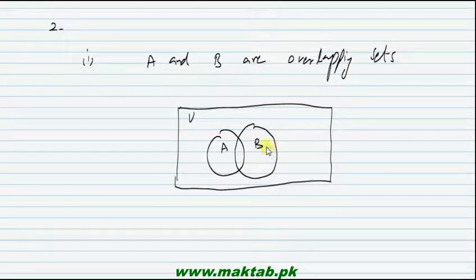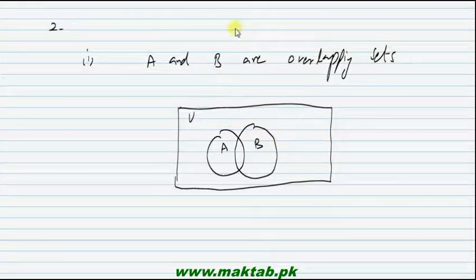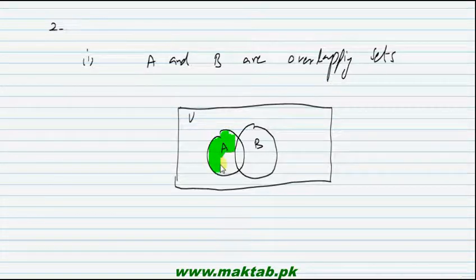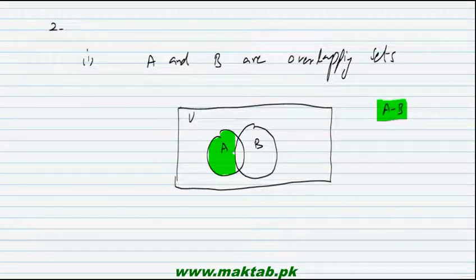Now we need to show A minus B. For example, from A we remove B. There is a part that is common to both A and B, which we will remove. So I will shade only the region that is in A but not in B. This region shows A minus B. I give it the same green color so it is clear.